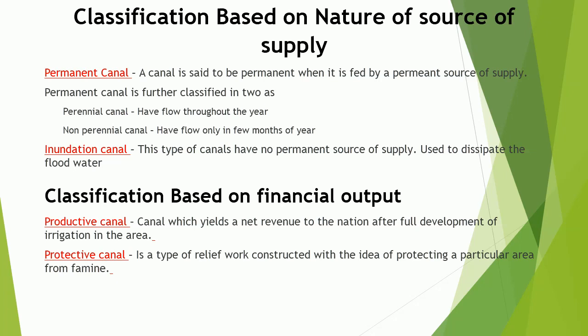Classification based on financial output: canals are classified into two types. Productive canal — a canal which yields a net revenue to the nation after full development of irrigation in the area. Protective canal — a type of relief work constructed with the idea of protecting a particular area from famine.